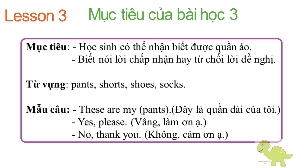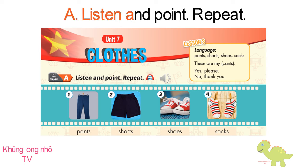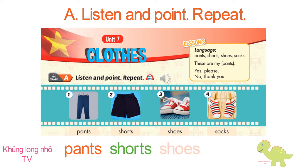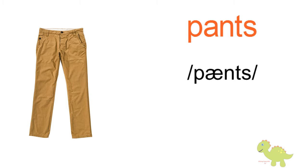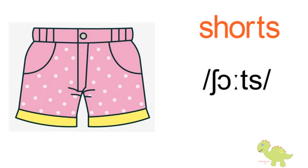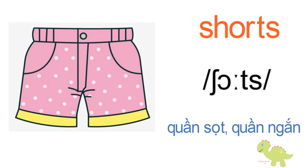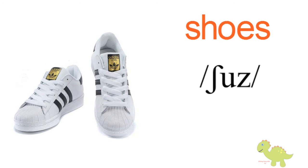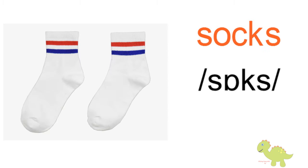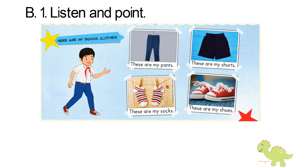Unit 7. Lesson 3. A. Listen and point, repeat. One. Pants. Two. Shorts. Three. Shoes. Four. Socks. Pants. Pants. Shorts. Shorts. Shoes. Shoes. Socks. Socks.